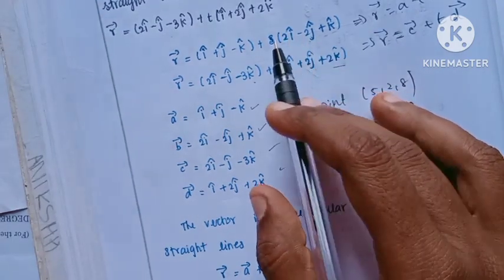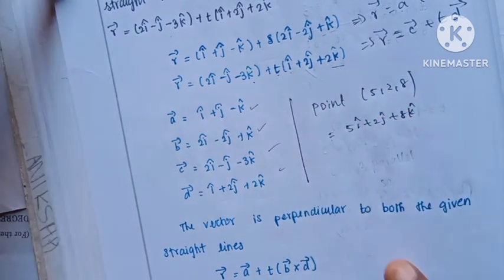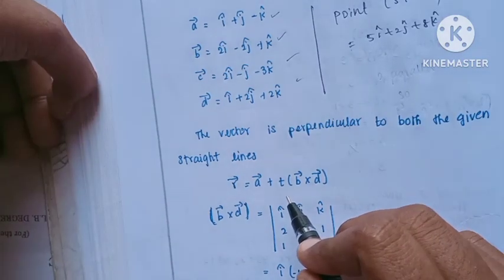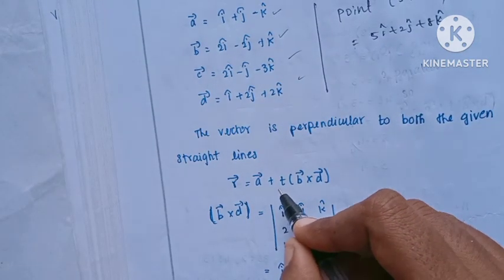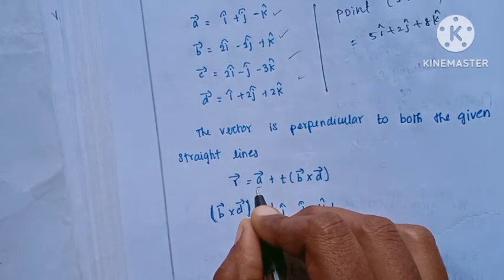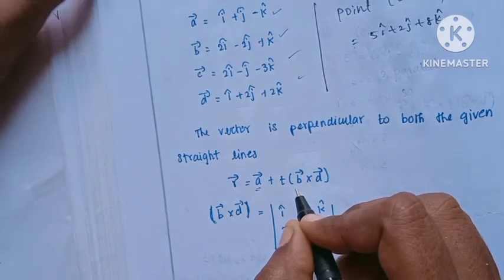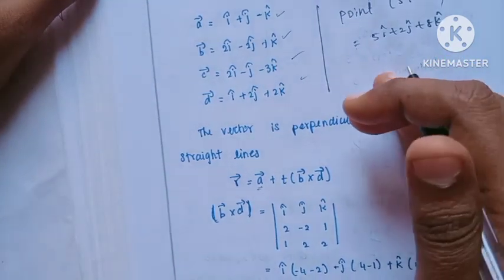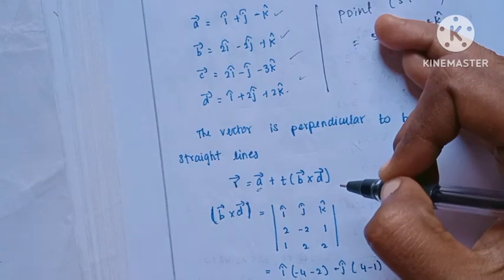The b-vector and d-vector are the direction vectors of the two given straight lines — they are parallel direction vectors. Since our required line is perpendicular to both, we do the cross product of b-vector and d-vector.